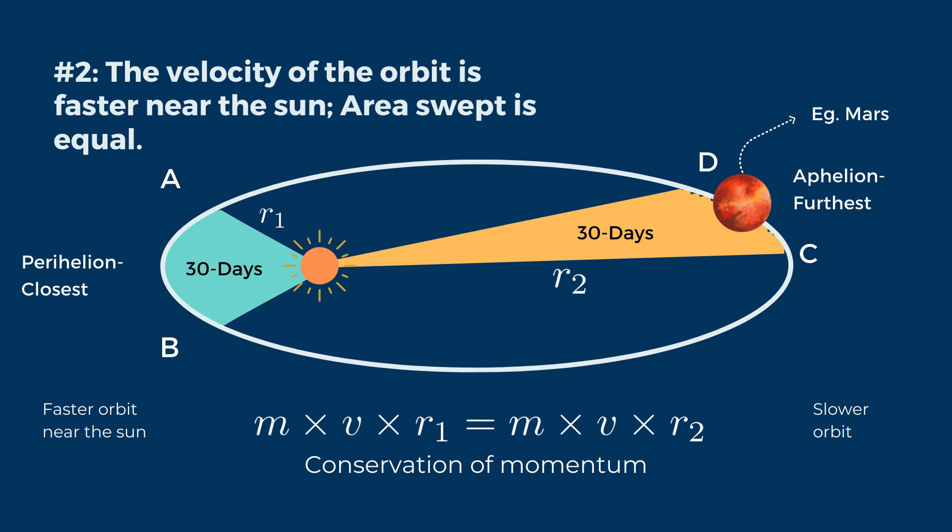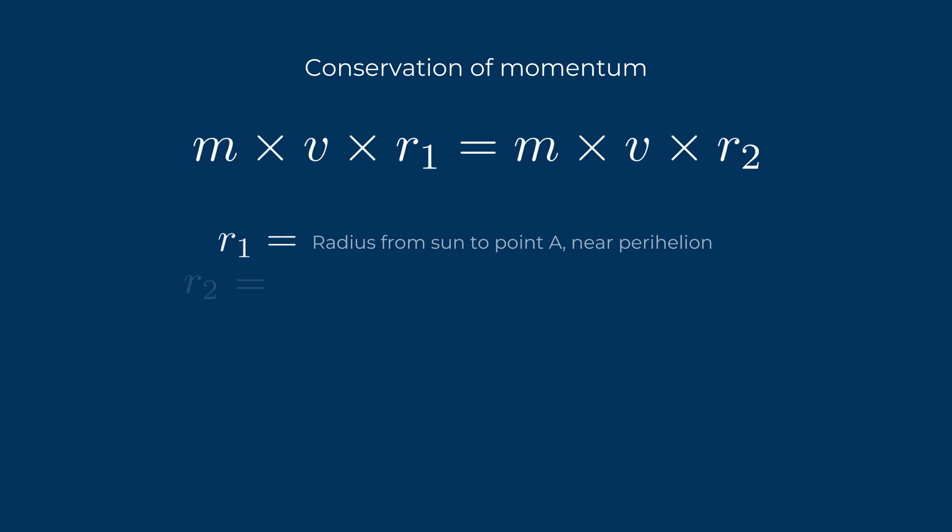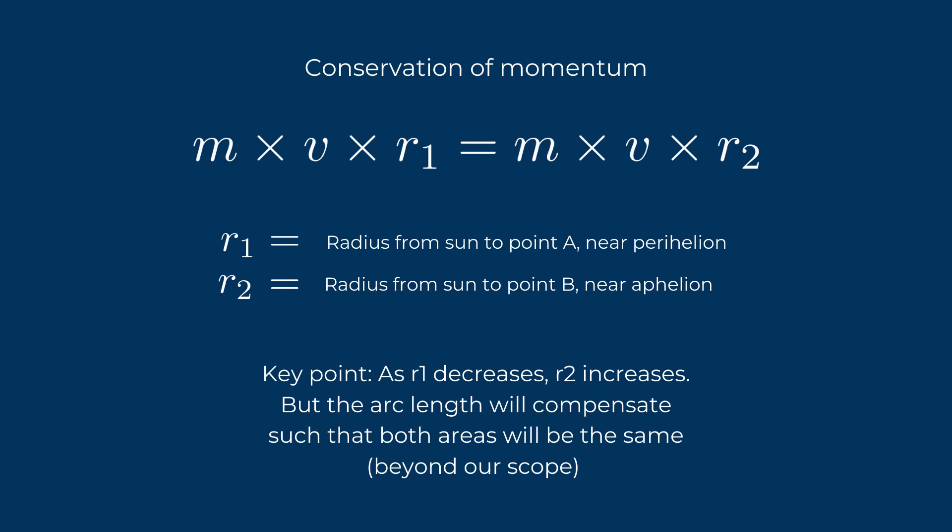At aphelion, the point where Mars is farthest from the Sun, the line segment is much longer, but Mars also moves very slowly, such that the area swept out is fixed. The second law turns out to be a consequence of the conservation of angular momentum, which was not a concept known to Kepler in the 17th century. Angular momentum is a measure of the amount of rotational motion in a body or system of bodies, like Mars and the Sun. In the absence of outside forces, it's a fixed quantity, implying a trade-off between the distance at which Mars orbits and its velocity, as Kepler noticed.